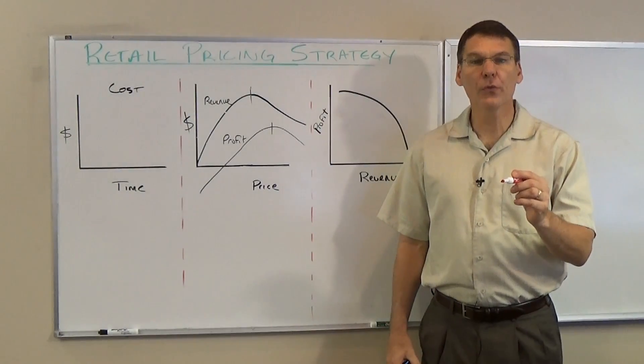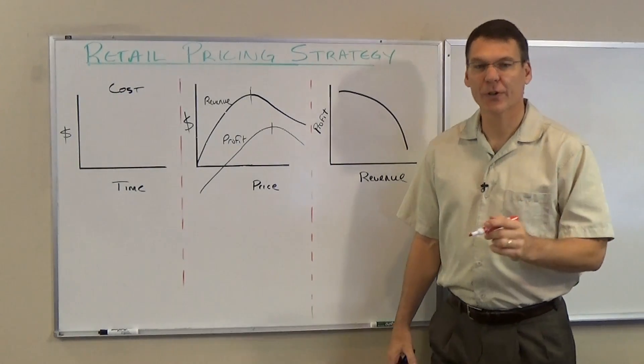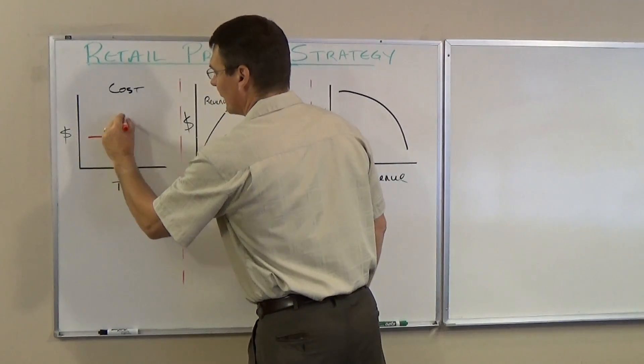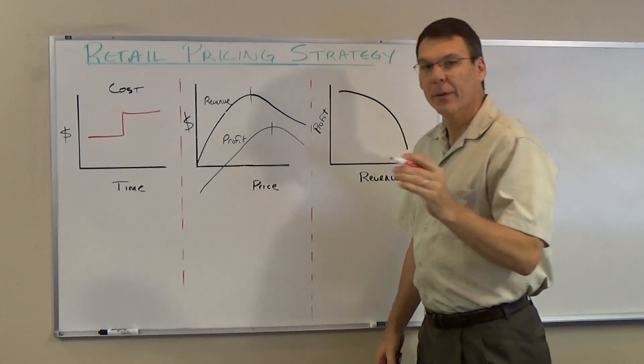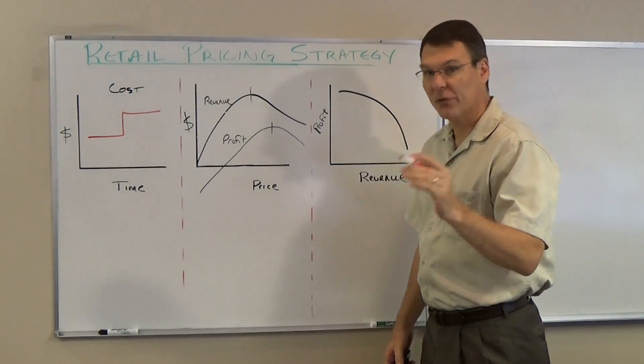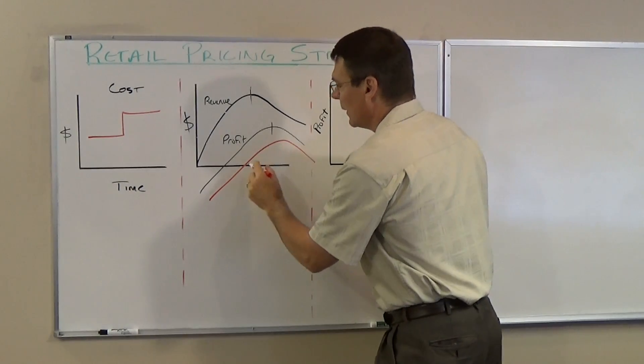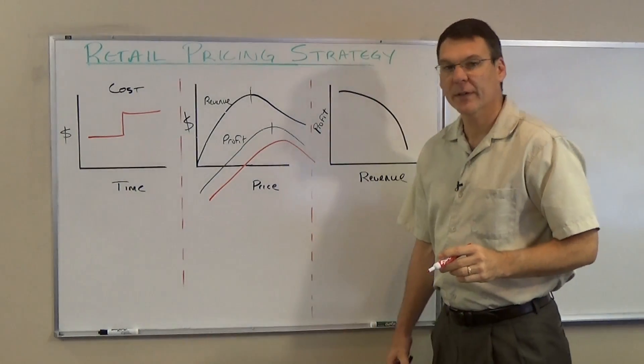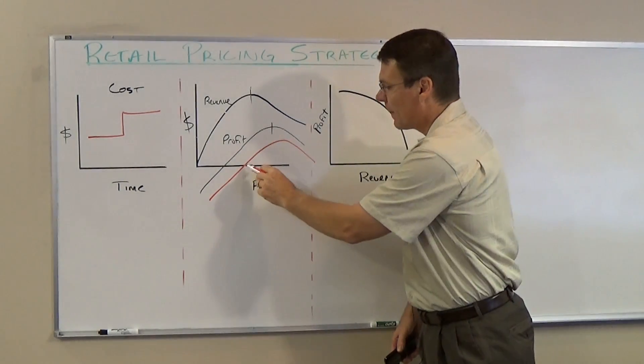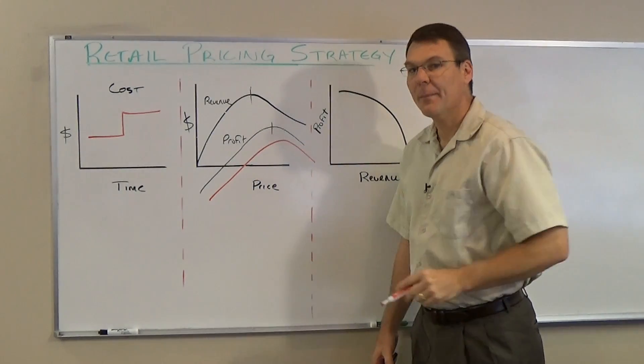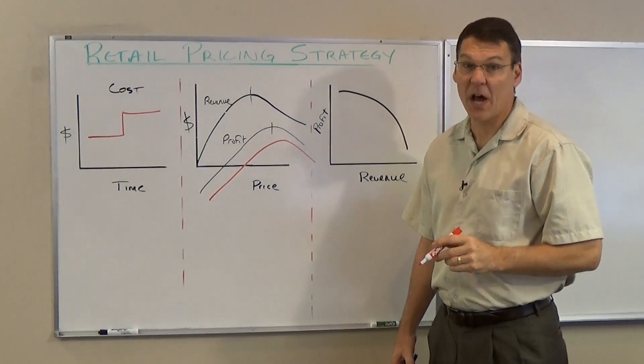Suppose that cost increases. The resulting profit looks like this. It becomes positive at a higher price and reaches a maximum also at a higher price.